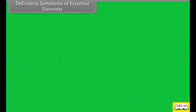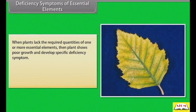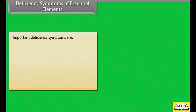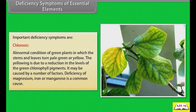Deficiency symptoms of essential elements: when plants lack the required quantities of one or more essential elements, the plant shows poor growth and develops specific deficiency symptoms. The morphological changes in plants due to deficiency of elements are called deficiency symptoms. Important deficiency symptoms include chlorosis: an abnormal condition of green plants in which the stems and leaves turn pale green or yellow. The yellowing is due to a reduction in levels of the green chlorophyll pigments, caused by deficiency of magnesium, iron or manganese.